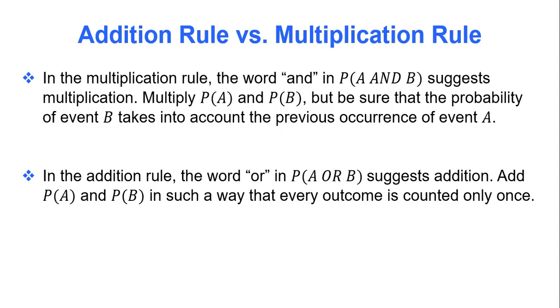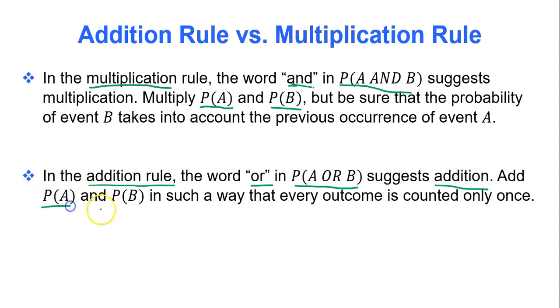A quick reminder on addition rule versus multiplication rule: the multiplication rule uses the word AND — you find the probability of event A and the probability of event B and multiply the two together. The addition rule uses the word OR — you find the probability of event A or event B by adding individual probabilities together in such a way that every outcome is counted only once, with no double counting.